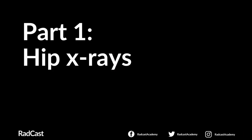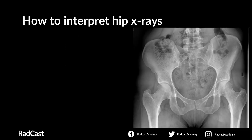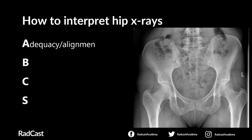So let's get started with the first half of the session where we're going to look at hip x-ray basics and how to interpret them. The mnemonic we can use to interpret hip x-rays in a systematic way is ABCs. This stands for adequacy and alignment, where you're looking at the quality of the x-ray image and checking it's not wonky.